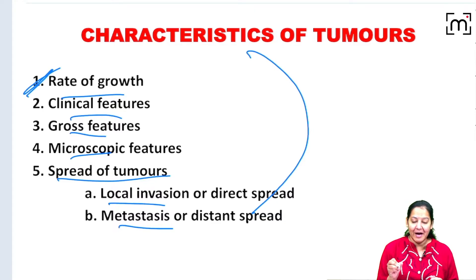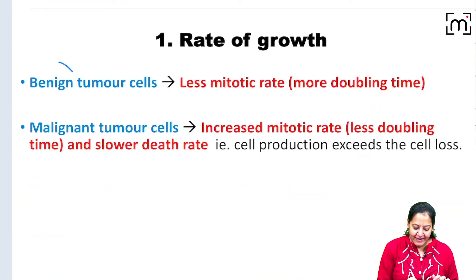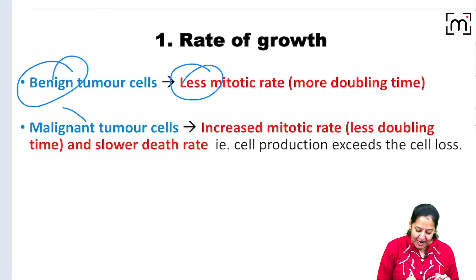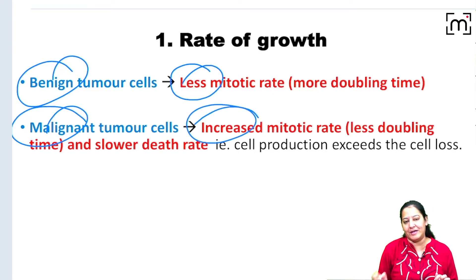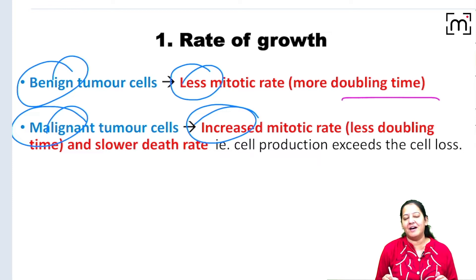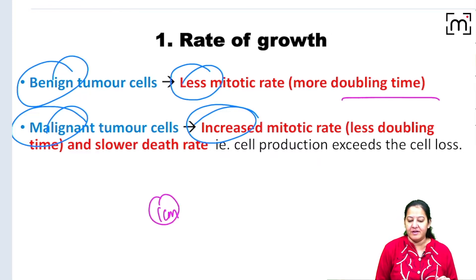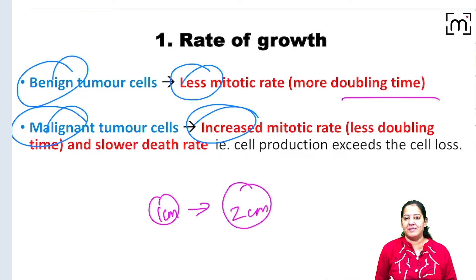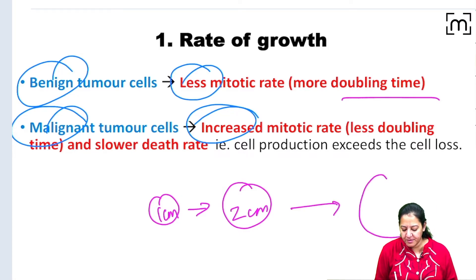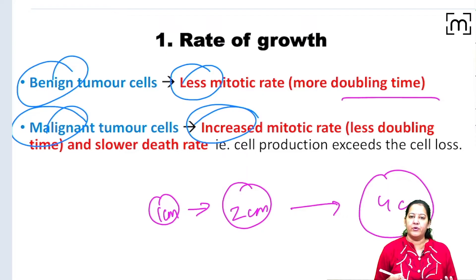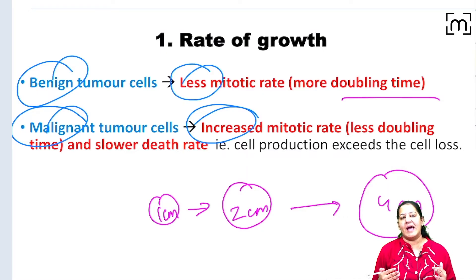Let's start with the rate of growth. Benign tumours have a low mitotic rate and malignant tumours have an increased mitotic rate. Doubling time is the time taken by the tumour to double in size. For example, if a tumour is one centimetre in diameter, how long does it take to grow from one centimetre to two centimetres, or from two centimetres to four centimetres? That time is known as doubling time.